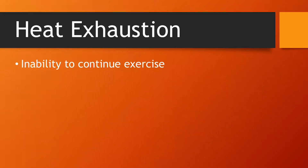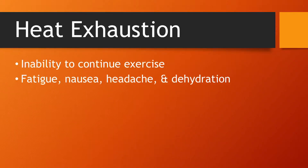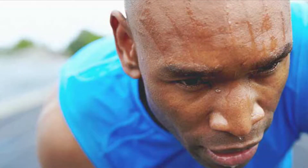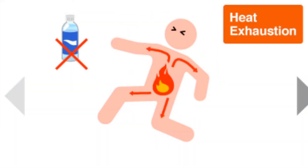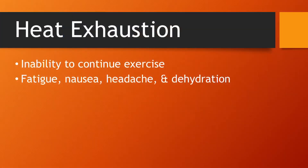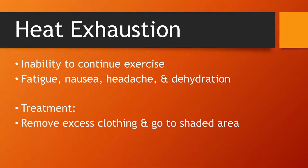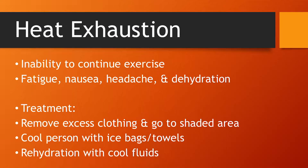Heat exhaustion is one of the most common forms of heat illness and can be found among a wide range of active people. It's characterized by an inability to continue exercising in the heat due to cardiovascular insufficiency or energy depletion. Common signs and symptoms include fatigue and weakness, heavy sweating, headache, nausea, vomiting, diarrhea, and lightheadedness and dehydration. Someone with heat exhaustion should be moved into a shaded or cool area, remove excess clothing, provide ice bags or cool towels and fans, and provide cool fluids to help rehydrate.